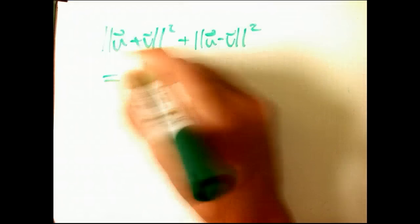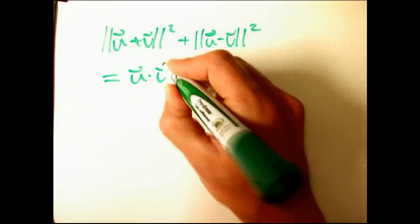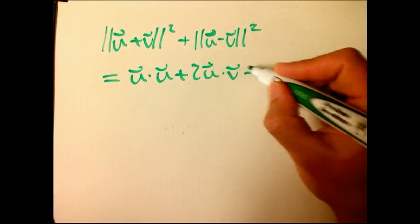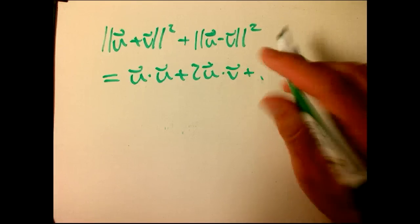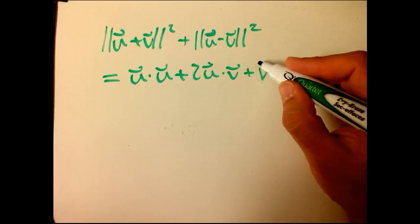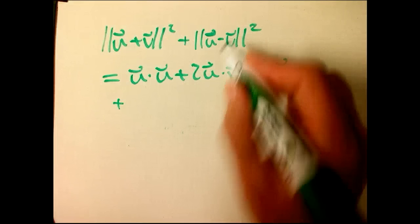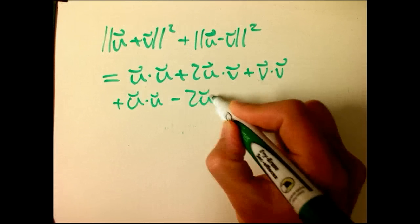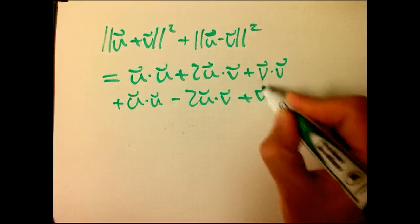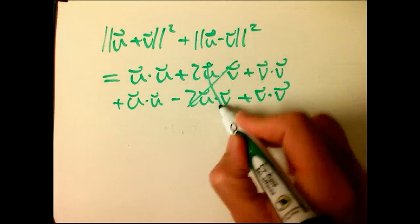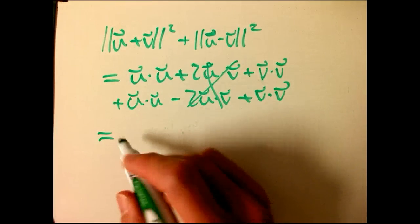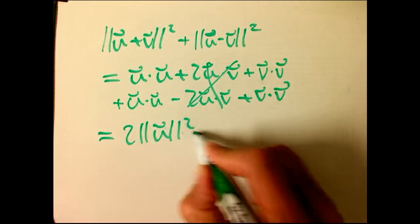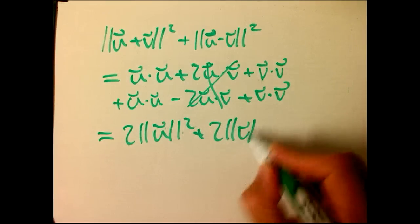suppose I look at the sum of two vectors in the magnitude squared and add that to the difference of two vectors magnitude squared. This is really U plus V dot itself. If I FOIL that out, and then this is the difference, and that just turns into a minus sign,